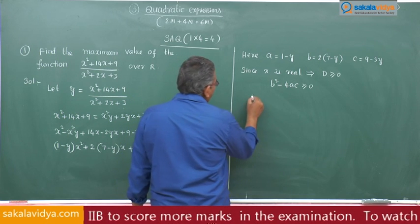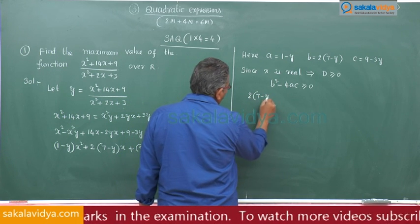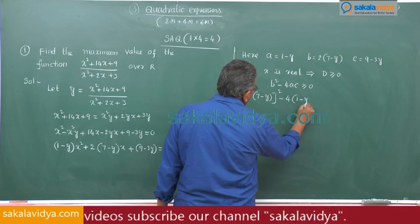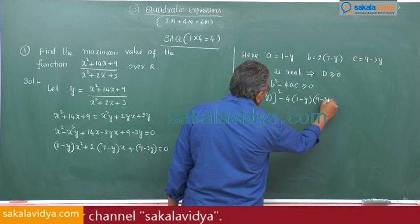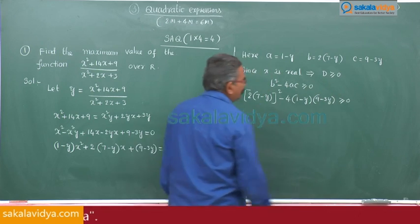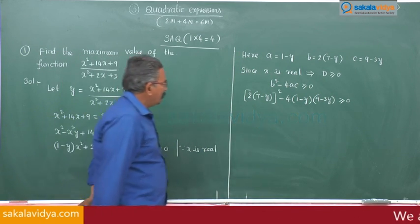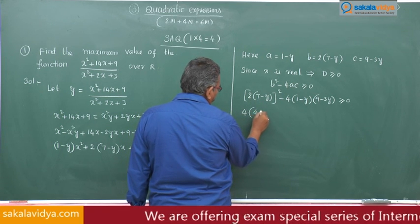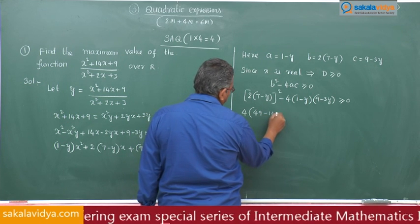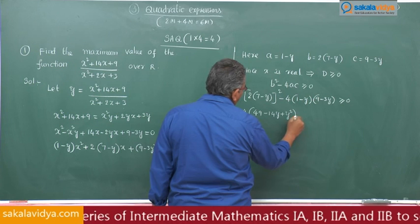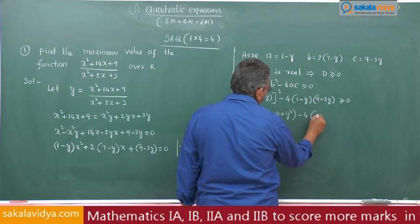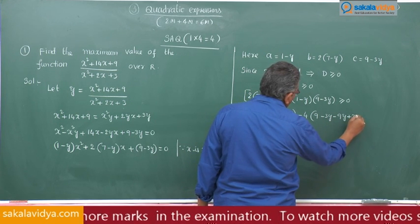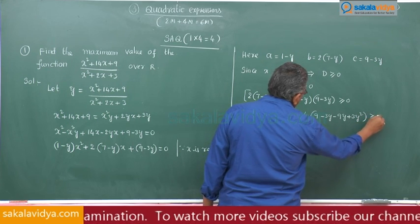Substituting: [2(7 − y)]² − 4(1 − y)(9 − 3y) ≥ 0, which gives 4(49 − 14y + y²) − 4(9 − 3y − 9y + 3y²) ≥ 0.